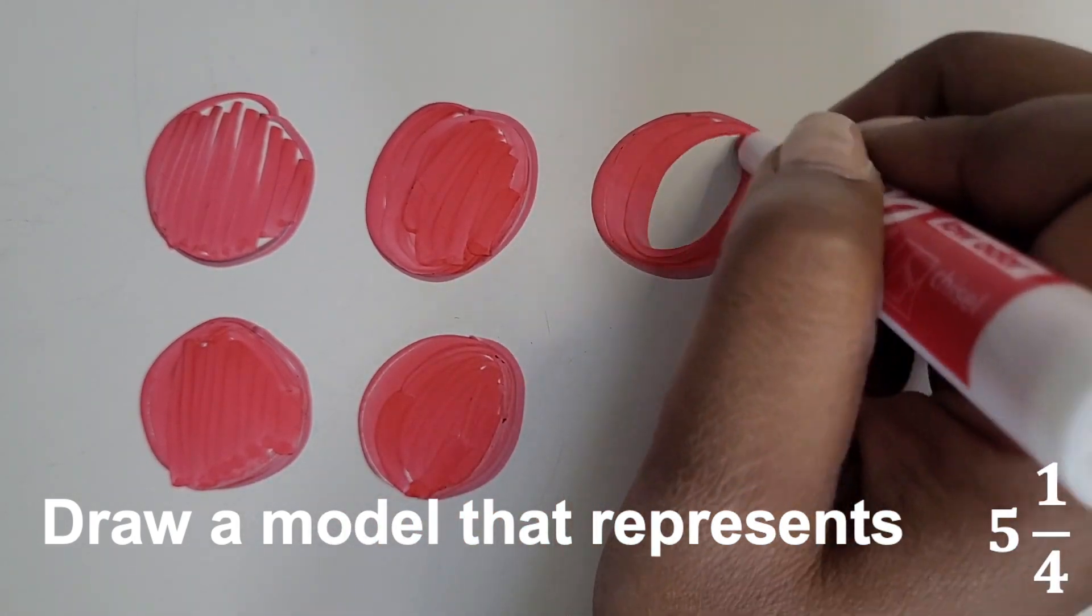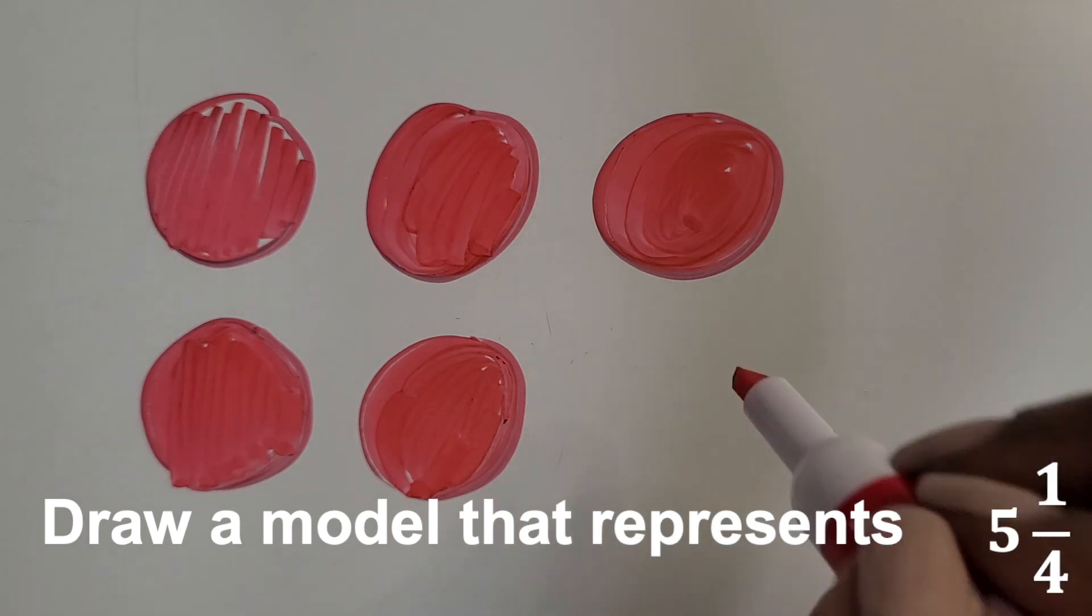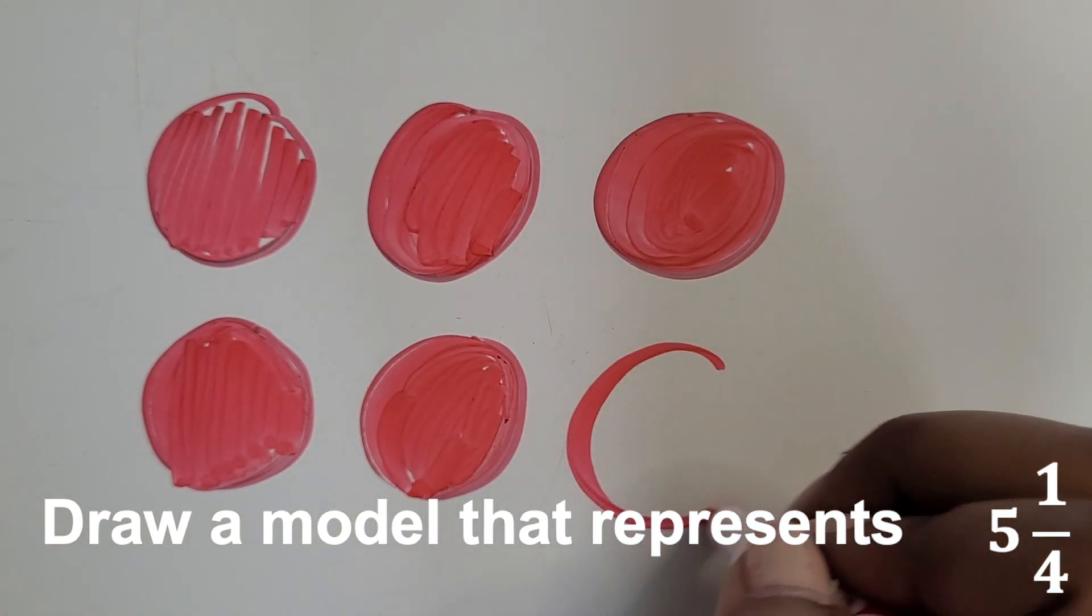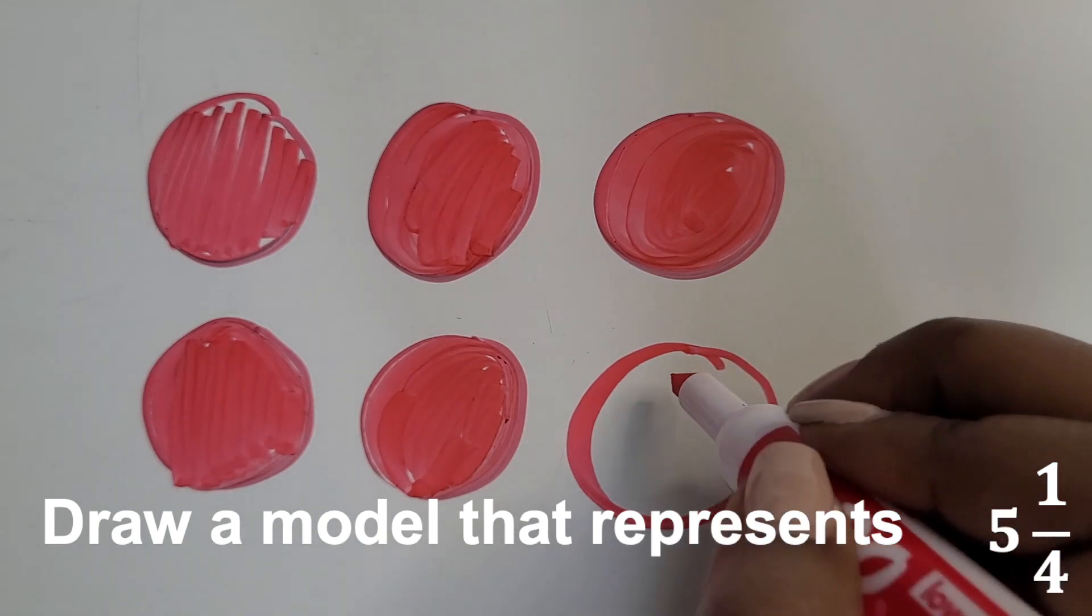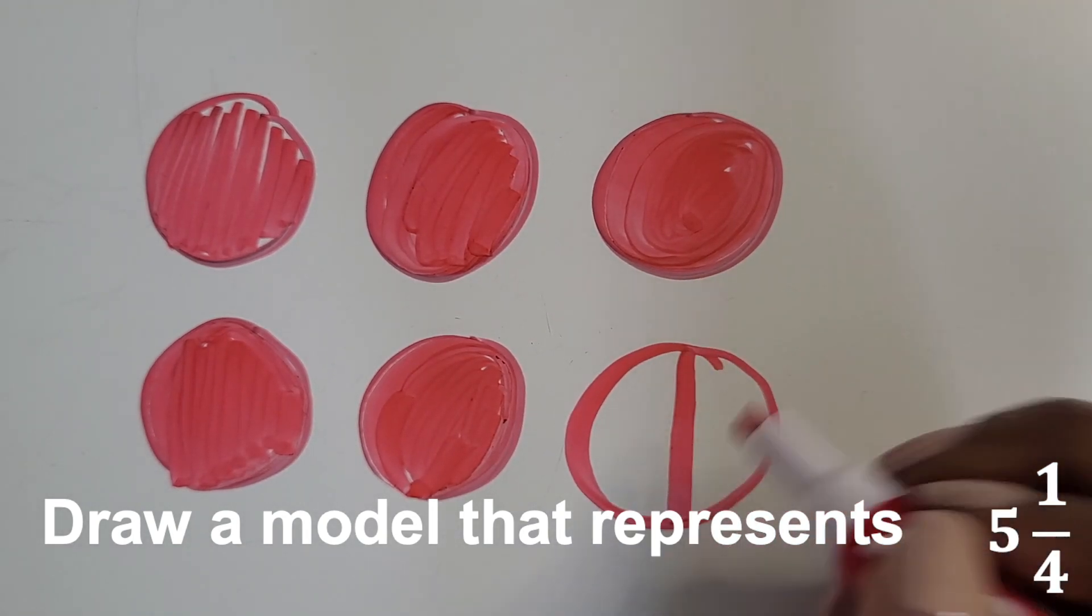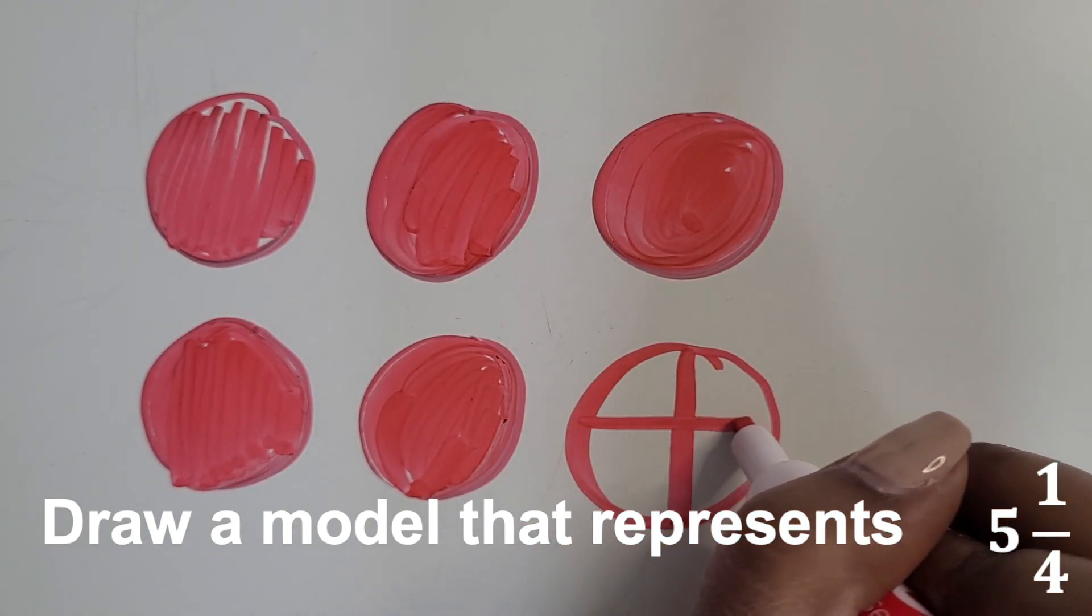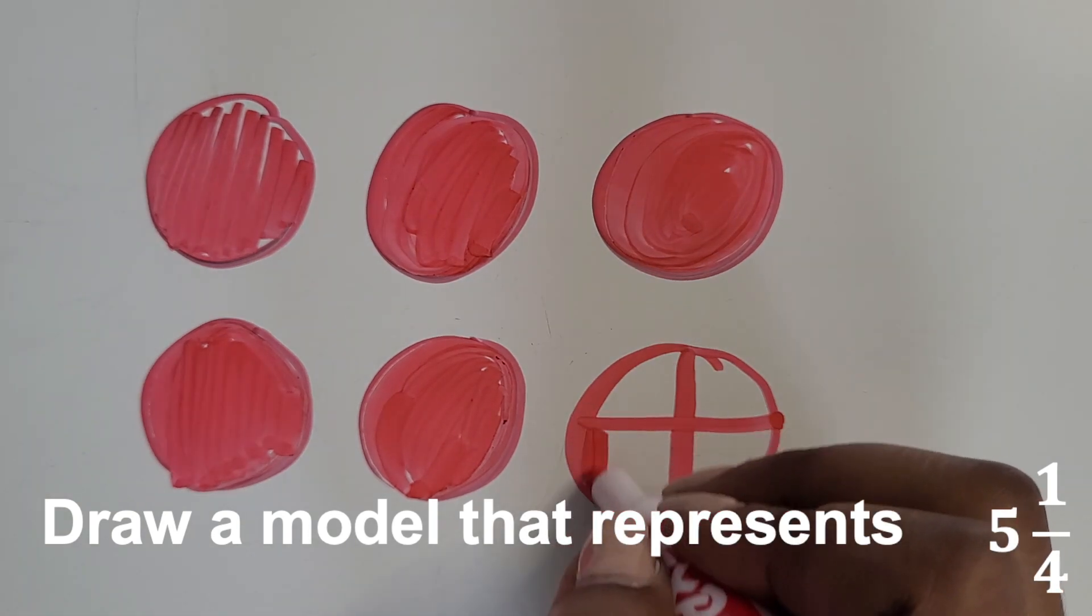And then we're going to draw a sixth whole and we're going to partition that whole into fourths. Our denominator shows it should be partitioned into fourths. Draw a line down the middle vertically and across horizontally, and then shade in one out of the four.